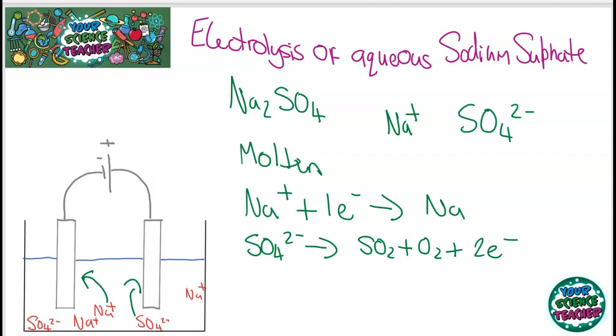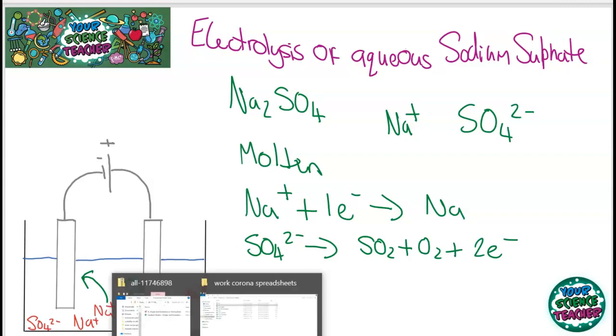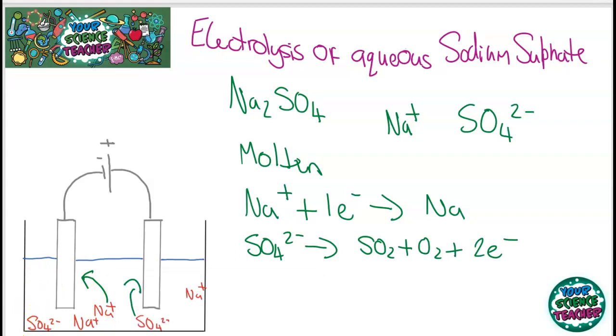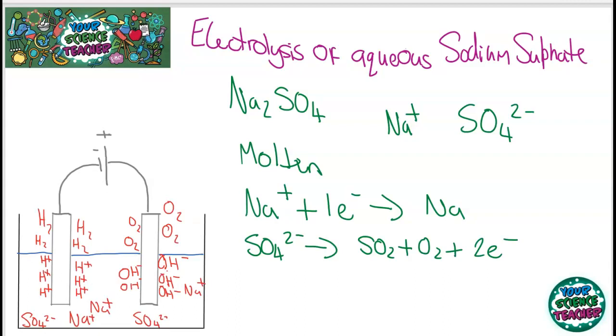However, if it is aqueous, we're actually going to get different products. When you're aqueous, you introduce two other ions into the mix: H+ and OH-. If you remember the rules for what happens when you dissolve it in water, if your metal is more reactive than hydrogen, then hydrogen is produced. Let's see what the half equation for that will look like. This time I have two H+ and I'm going to add two electrons, and that's going to go to H2.